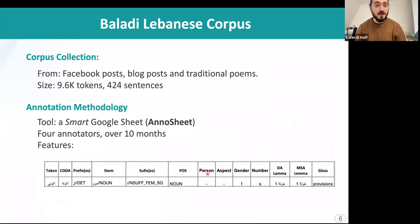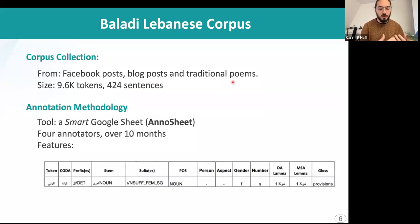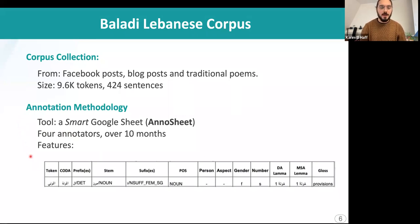Hello everyone. Thank you for tuning in. When we created the Baladi corpus, which we used to extend the Corras corpus to create a more Levantine corpus, we collected about 9.6 thousand tokens divided into 424 sentences from many different places: Facebook posts on social media that have a more colloquial tone, blog posts that have a more informative tone written in the Lebanese dialect, and traditional poems of the Zajal tradition in Lebanon. To annotate our corpus, we populated a smart Google sheet with it, and it was annotated by four annotators over a period of 10 months. Here is an example of one annotated word with many different features that we will be talking about in detail in the next slides.